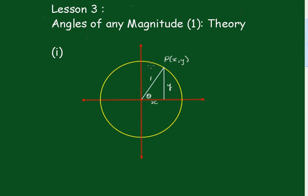In this part, we're going to set up the unit circle and work out the ratios of sine, cos, and tan from this unit circle.